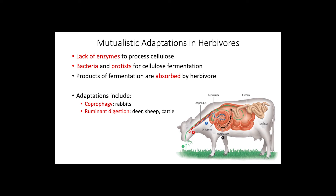Two interesting adaptations of this type of mutualism include coprophagy in rabbits, where bacteria live in the large intestines, causing fermentation products to be lost with feces. Therefore, rabbits feed on some of their feces to recover the lost nutrients by passing the waste through the alimentary canal a second time.